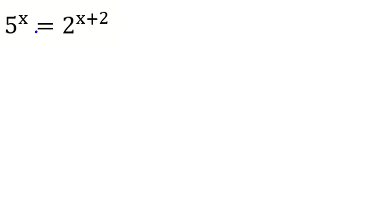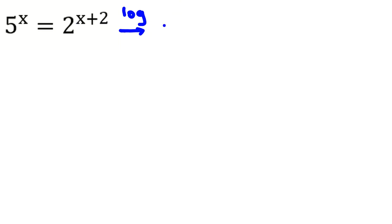We have 5 to the x equal to 2 to the x plus 2, and we want to find x. We don't like that x is in the exponent, so we try to bring it down to the base. One important approach is to take the log of both sides.